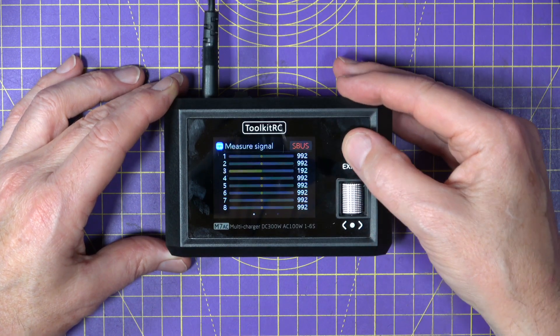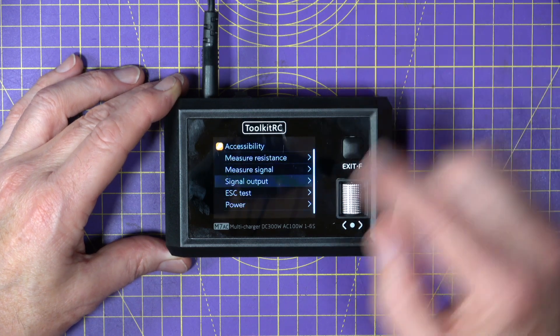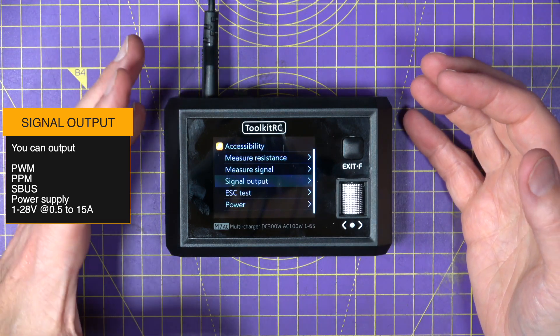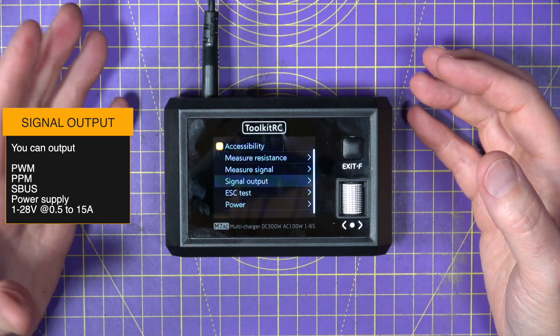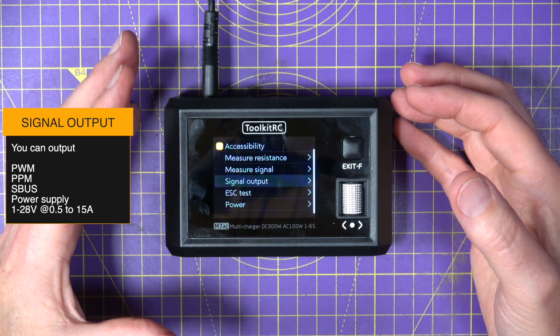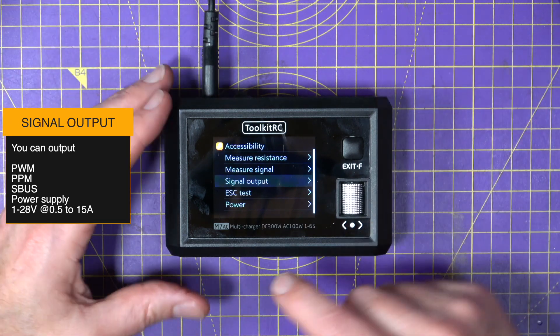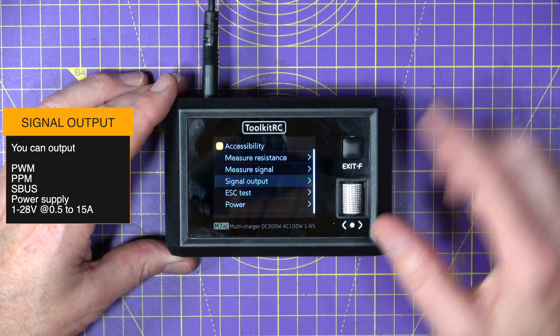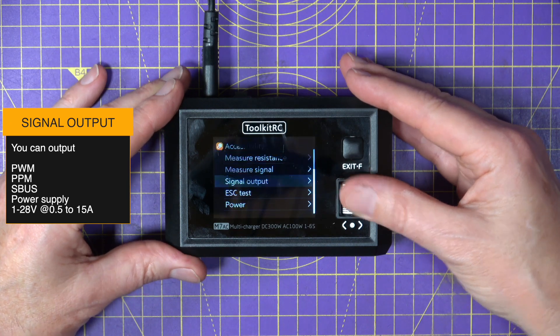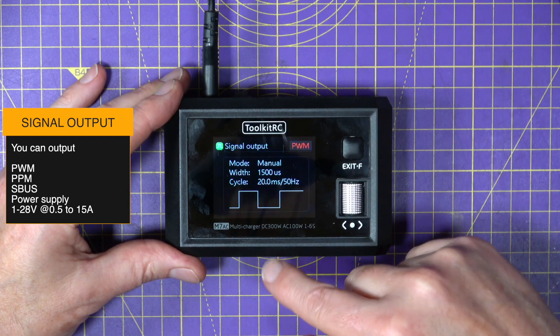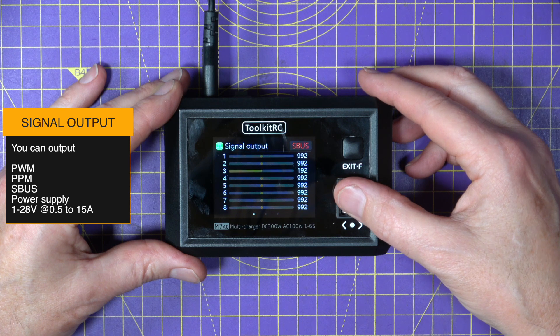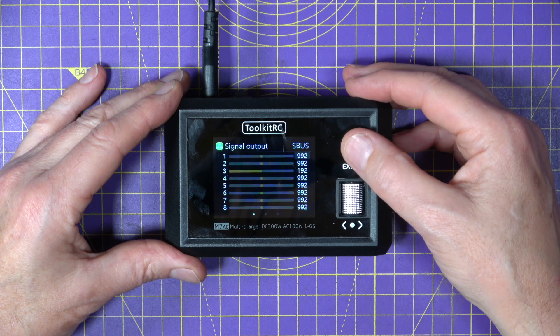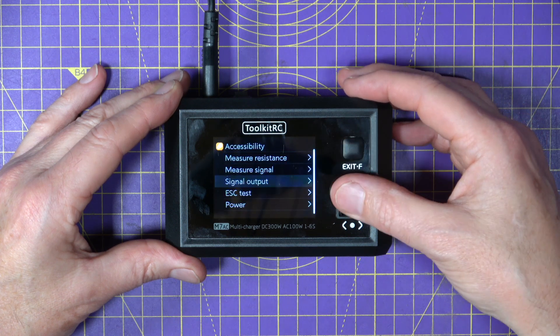If you then waggle the sticks on your transmitter and you connect the receiver onto here you'll actually see these S bus signals moving up and down so it's a way of testing your receiver. Equally you can actually use this to generate an S bus output. Let's say you weren't quite sure whether your receiver was working correctly or whether your flight controller wasn't responding correctly to S bus, you could use this to generate an S bus signal directly into your flight controller and test it out.